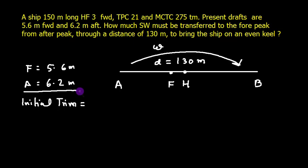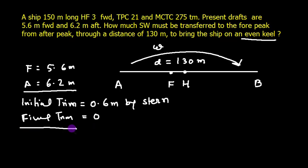Now the final trim is even keel, so the final trim is 0. We know it very well—even keel means the draft forward and after draft is same. In fact, the midship draft is also same, so we call it that the trim is zero.